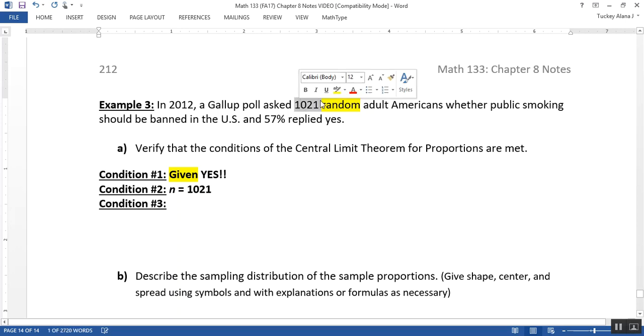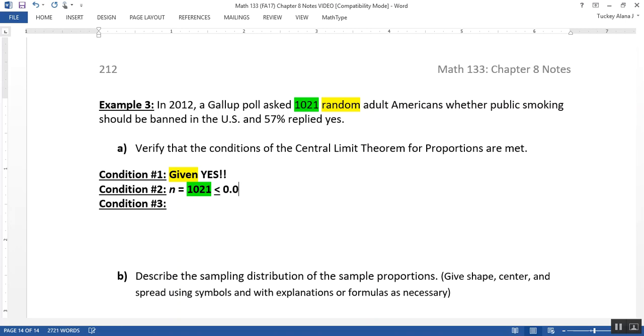That's your sample size right there. So we want to ask ourselves, is that 1021 less than 0.05 capital N? Now, we don't actually know what capital N is. I mean, although we could Google it, how many adult Americans are there in the U.S. in 2012. But the population of the U.S. is somewhere around 350 million-ish. And so we can wave our hands at this a little bit and just say, of course, 1021 is far less than 5% of how many Americans there are, how many adult Americans, I should say.